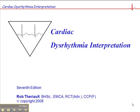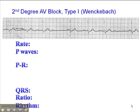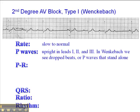This next presentation is on 2nd degree AV block type 1, also known as Wenckebach, and this is located on page 67 of your dysrhythmia interpretation workbook. In Wenckebach, the heart rate is typically slow to normal. P-waves are usually upright in leads 1, 2, and 3.